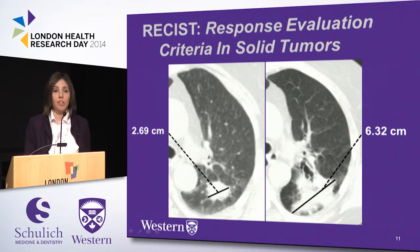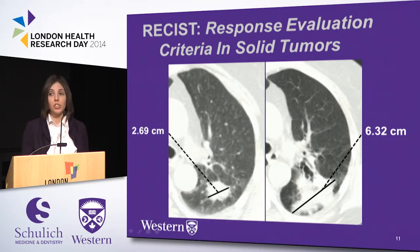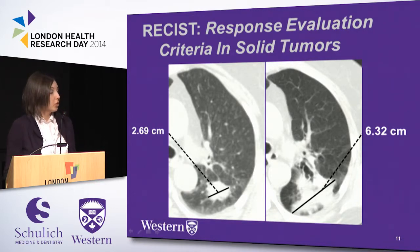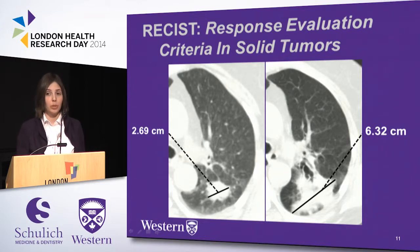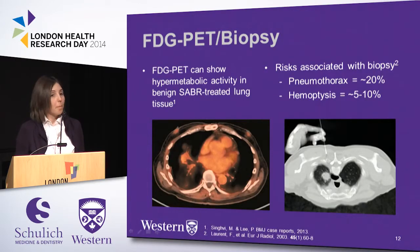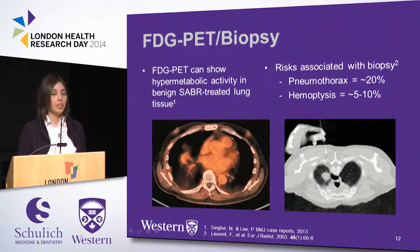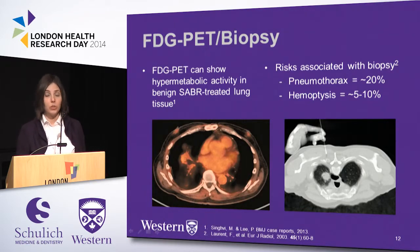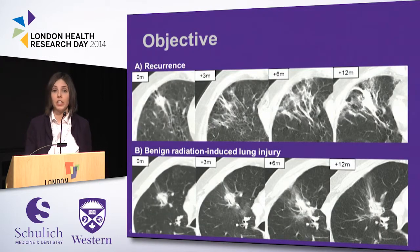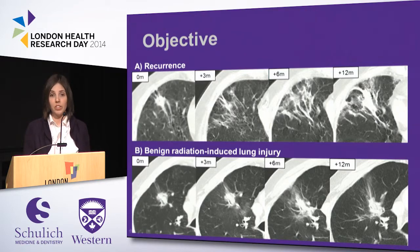What techniques do we currently have to assess response post-SABR? The current clinical standard is RECIST, or Response Evaluation Criteria in Solid Tumors, where the physician measures the longest axial diameter of the tumor pre- and post-treatment to determine treatment response. FDG PET and biopsy can also be used; however, hypermetabolic activity is seen in benign SABR-treated lung even up to two years post-treatment, and the risks associated with biopsy prevent it from being used as a first-line tool. Therefore, what's critically needed is a reliable measure of recurrence on CT imaging, as SABR utilization is rapidly increasing and CT scanning is the standard imaging follow-up for these patients.